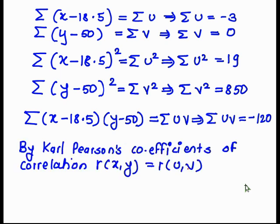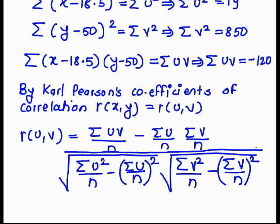We use the Karl Pearson coefficient of correlation, noting that the relation between x and y is the same as the relation between u and v. So we calculate the coefficient of correlation between u and v, which equals summation of uv over n minus (summation of u over n)(summation of v over n), divided by the square root of [summation of u squared over n minus (summation of u over n) squared] times the square root of [summation of v squared over n minus (summation of v over n) squared].